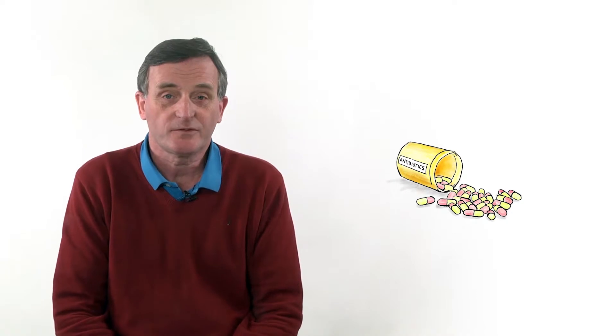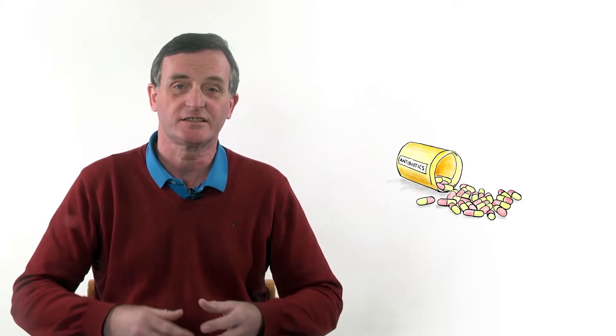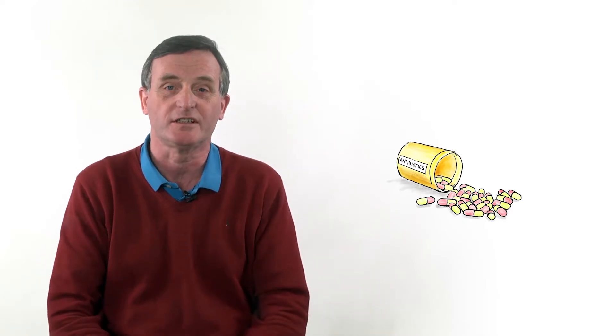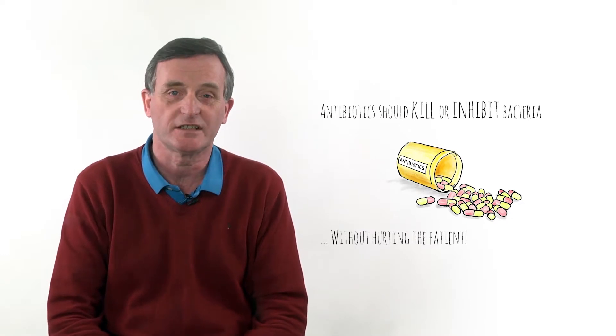Now the economics is bad, what about the science? Well antibiotics are very special drugs. They have to kill bacteria or stop them growing in the context of an infection in a human body. That means you have to have chemicals that can distinguish between bacteria and human cells.